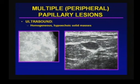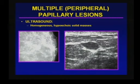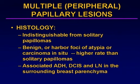When the lesions present as a mass, on ultrasound they can appear as a homogeneous hypoechoic solid mass, sometimes with a little heterogeneity within. Histologically they are indistinguishable from solitary papillomas — they are benign, or they can harbor foci of atypia or carcinoma in situ. However, this occurs at a much higher rate than in solitary papillomas. In addition, they can be associated with atypical ductal hyperplasia, ductal carcinoma in situ, and lobular neoplasia in surrounding breast tissue.